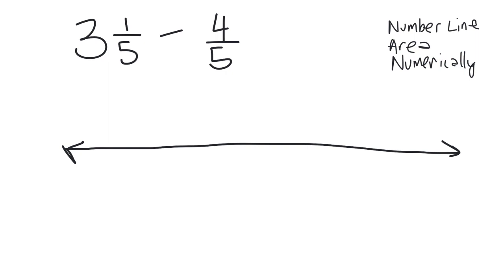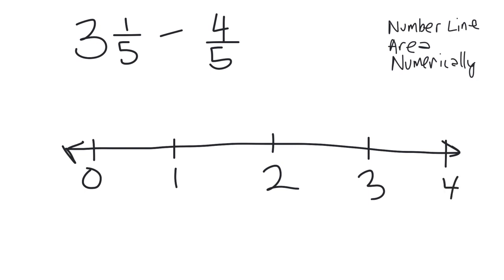Starting with three and a fifth on a number line. I'm going to put three and a fifth on a number line — it's going to be way over here — and I'm going to chop it up into five equal-sized intervals: one, two, three, four, five. And I can see that three and one-fifth lives right there.